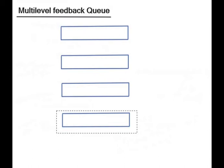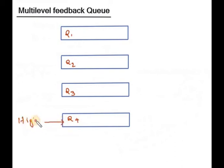Here you can see four different levels of queues. This is Q1, this is Q2, Q3 and Q4. The highest priority is at Q4. And the lowest priority is at Q1.